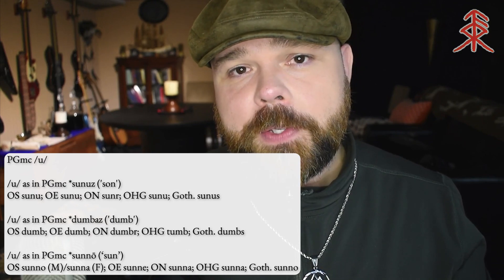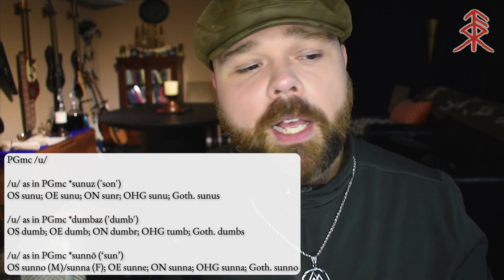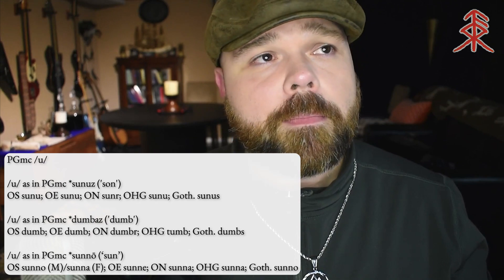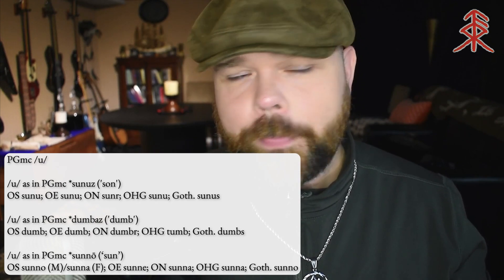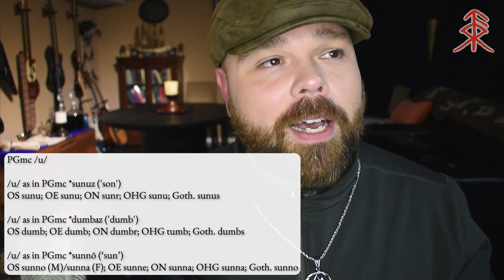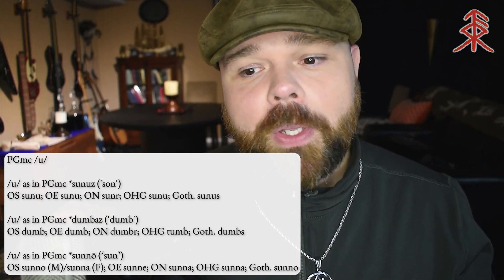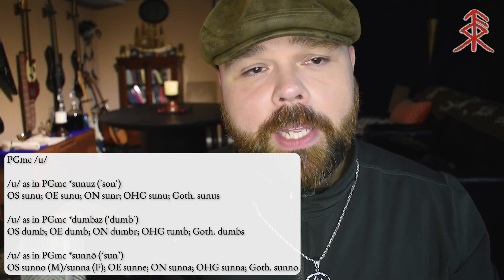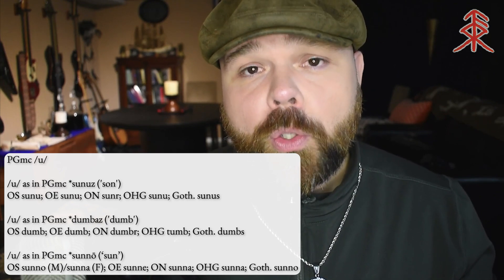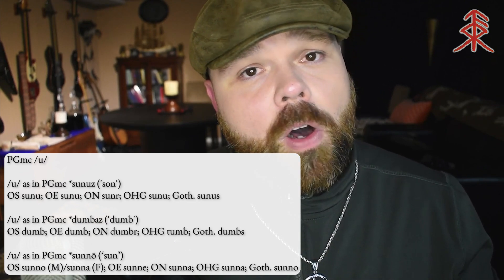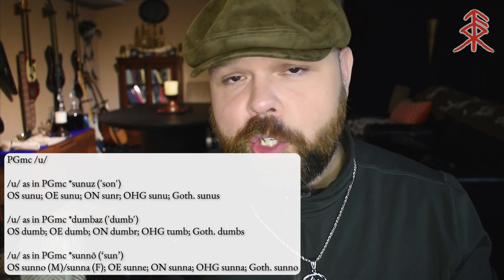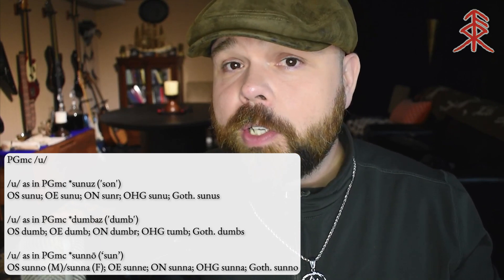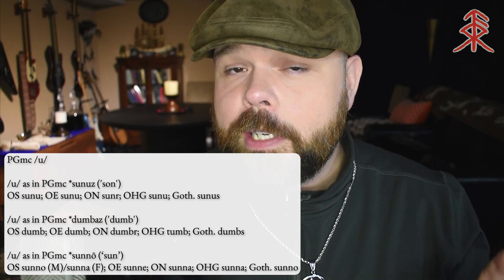Let's go ahead and look at two more examples just to prove our point. The word I'm providing here is *dumaz* — that means 'dumb.' Old Saxon: *dumb*. Old English: *dumb*. Old Norse: *dumbr*. Gothic: *dumbs*. Old High German: *tumb*. You can see how all of those words for 'dumb' with the short U are going to be reconstructed into Proto-Germanic. And congratulations — you can now officially tell people that they are a dumbass in six different languages.